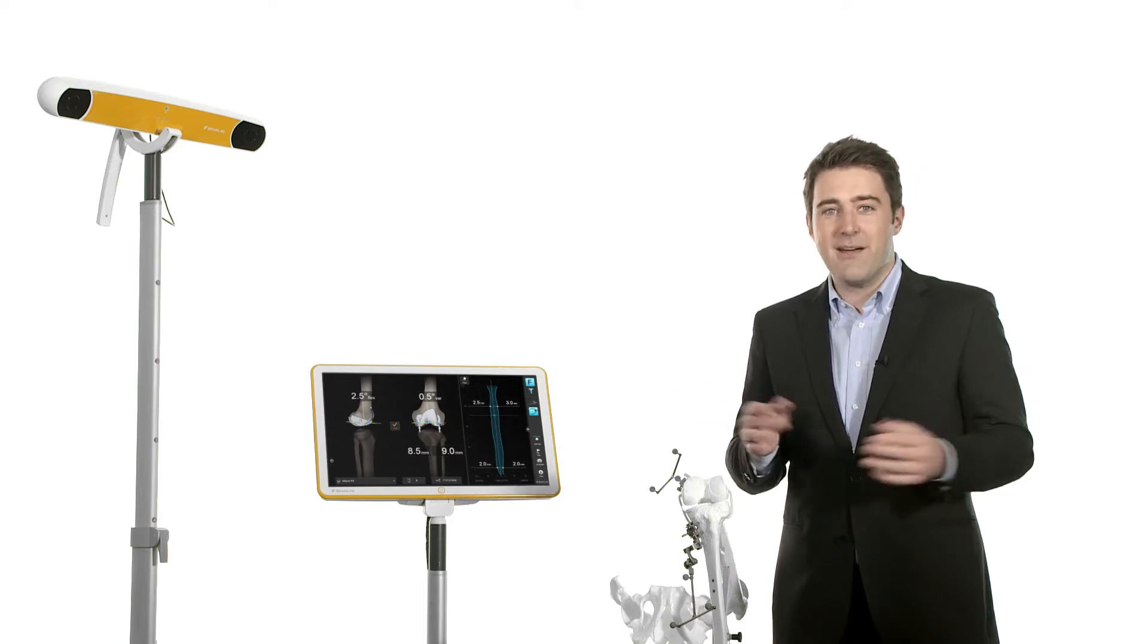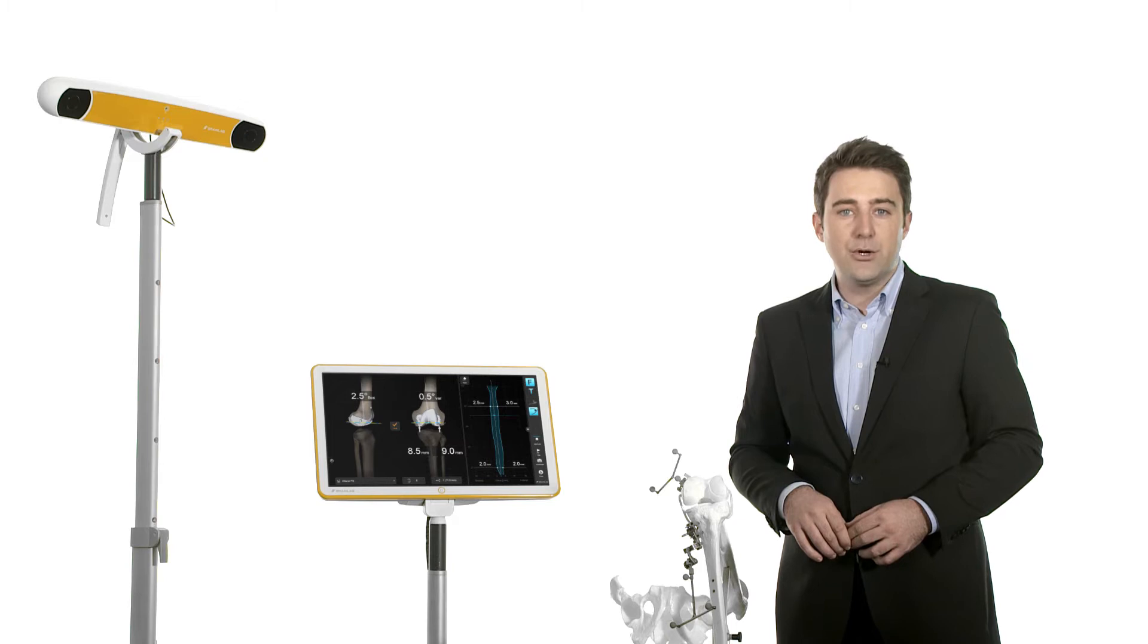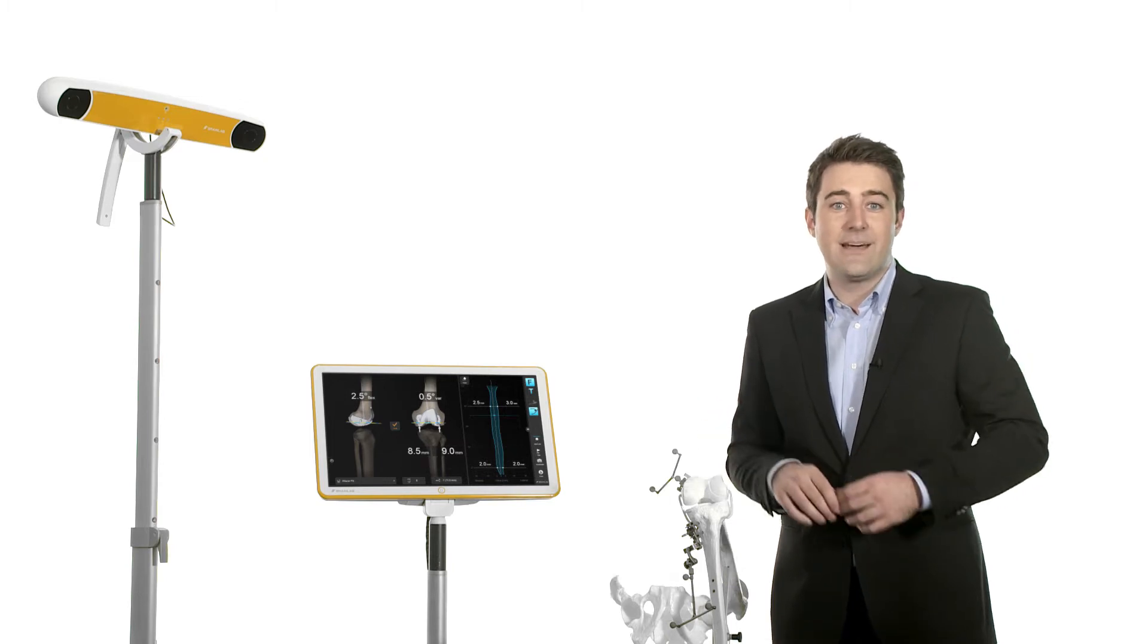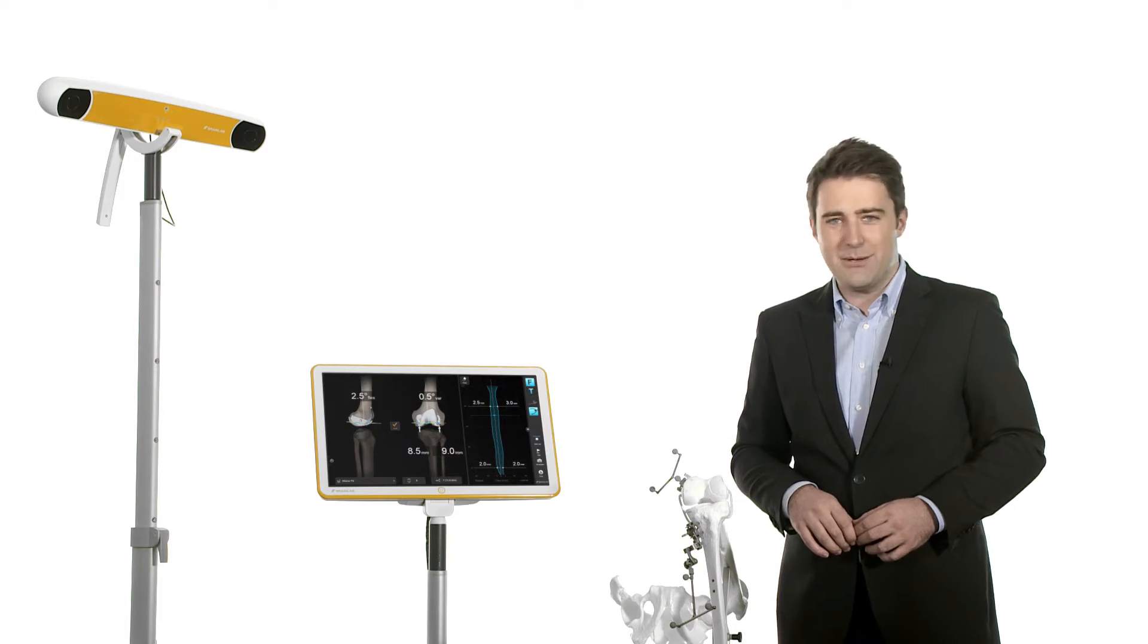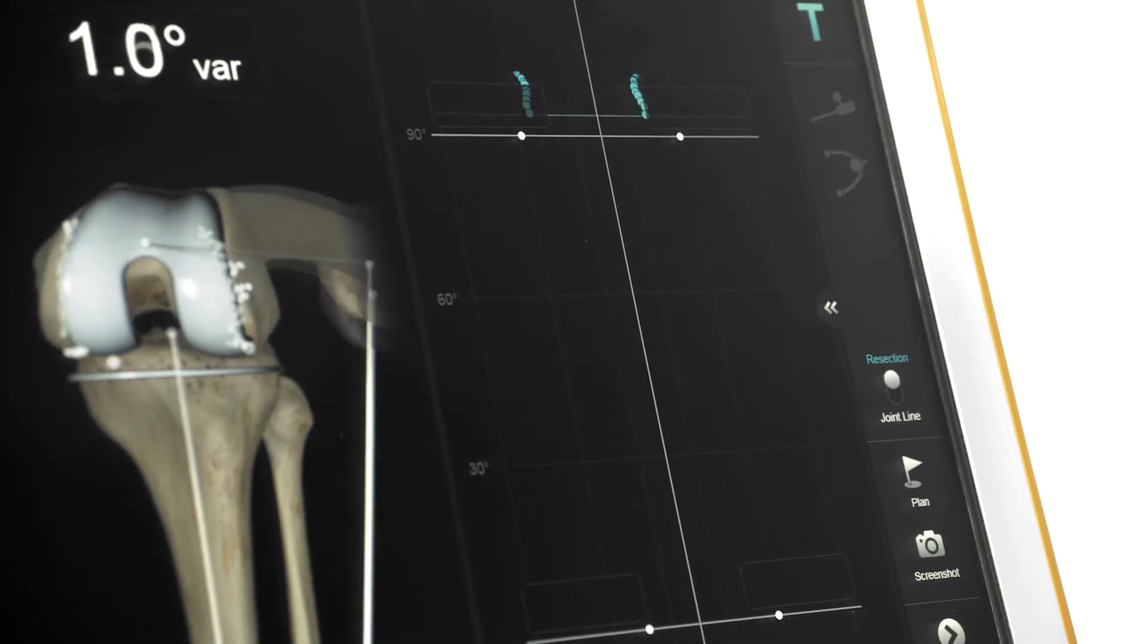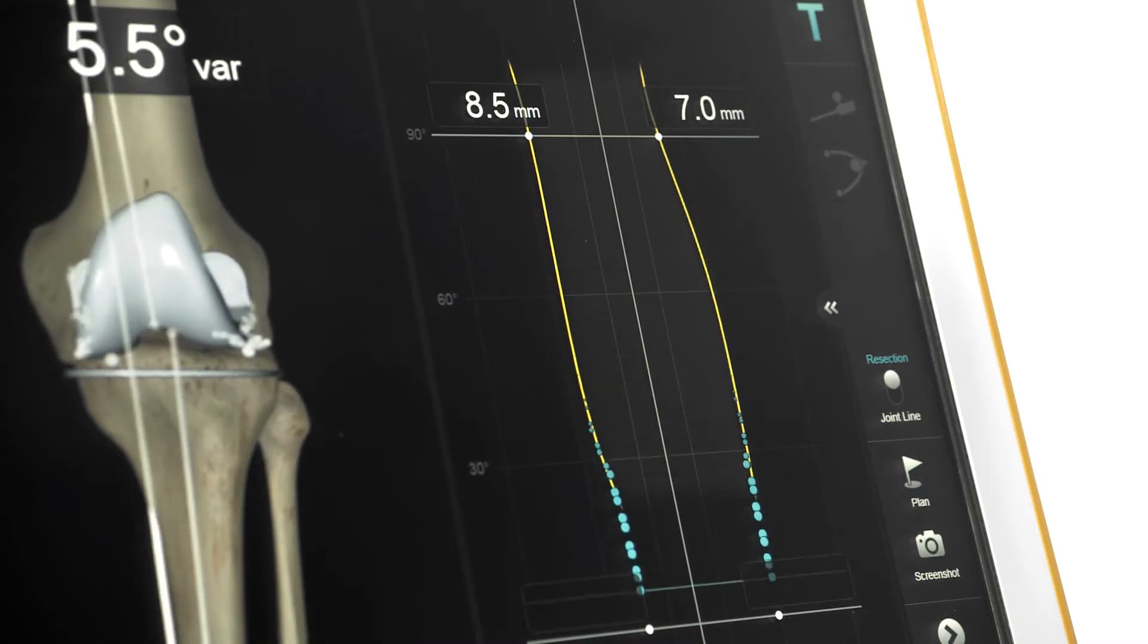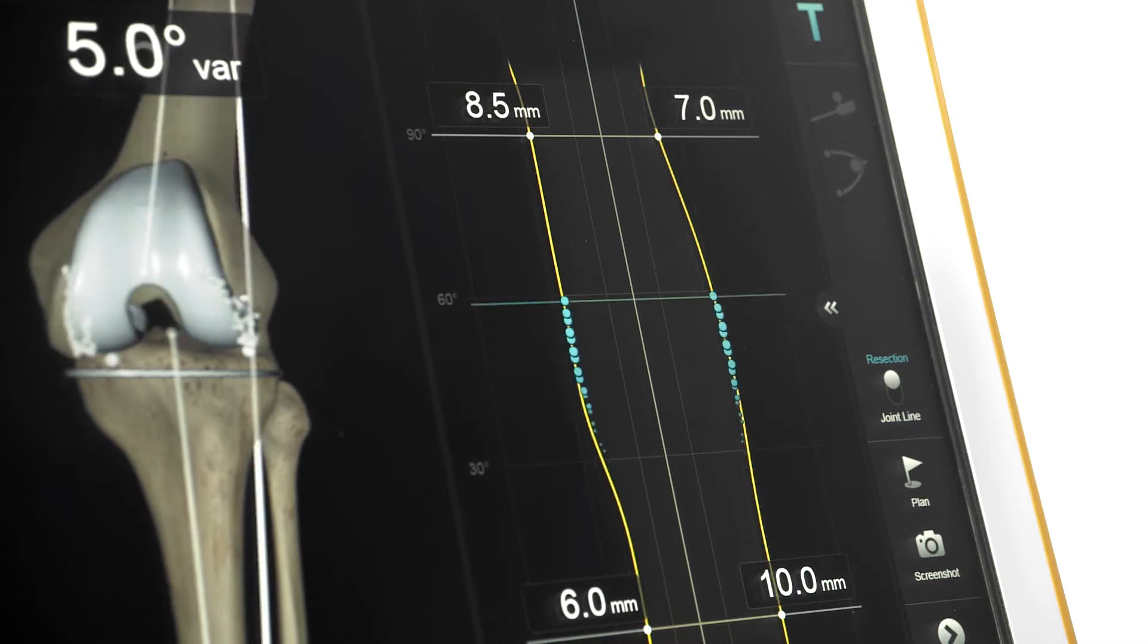For the first time, BrainLab presents a knee navigation software that visualizes joint stability over the full range of motion, allowing the surgeon to examine kinematic movement of the knee joint before any resection has been made. The key feature of Knee3, the balance graph, provides the surgeon with real-time feedback of the stability outcome and the potential effect of any surgical step.